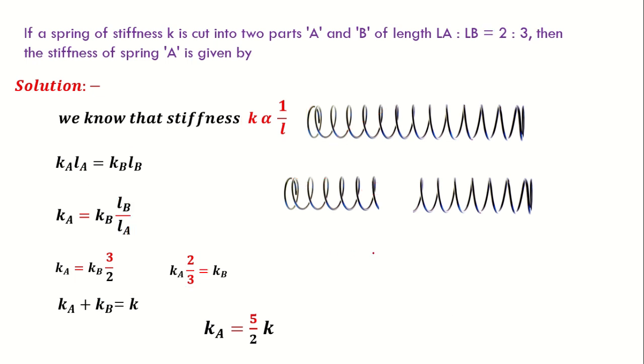This question can be asked in many different ways. Remember one short trick: if the spring is made into two equal parts, then stiffness of that portion will be doubled. That is, if the spring is made into half, two parts, the stiffness will be doubled. Now let us move on to the next question.